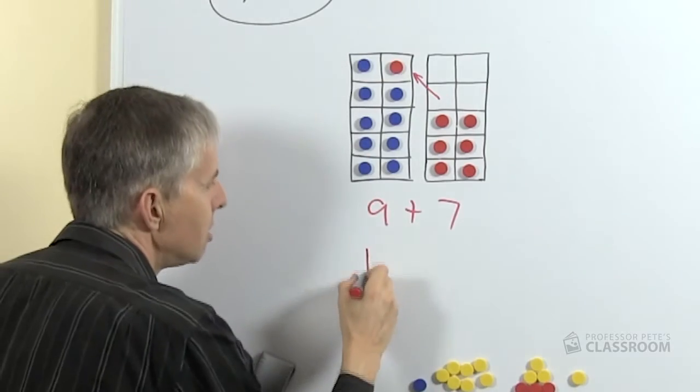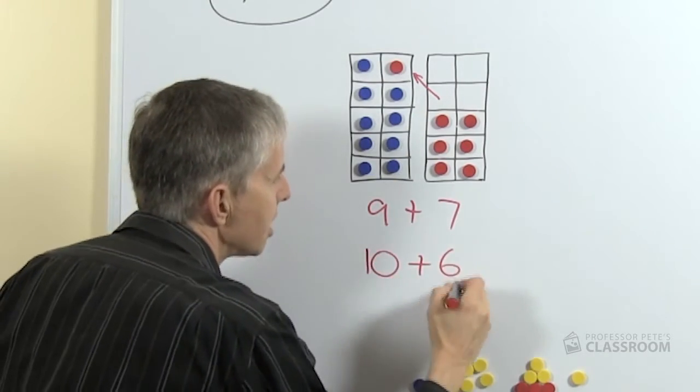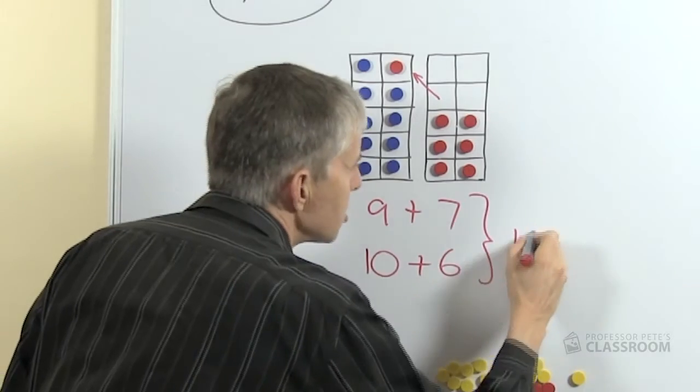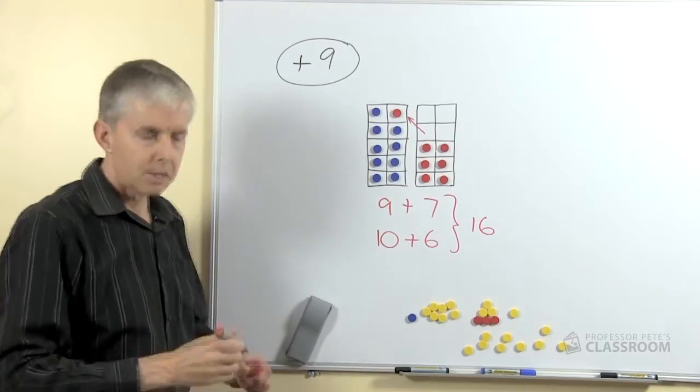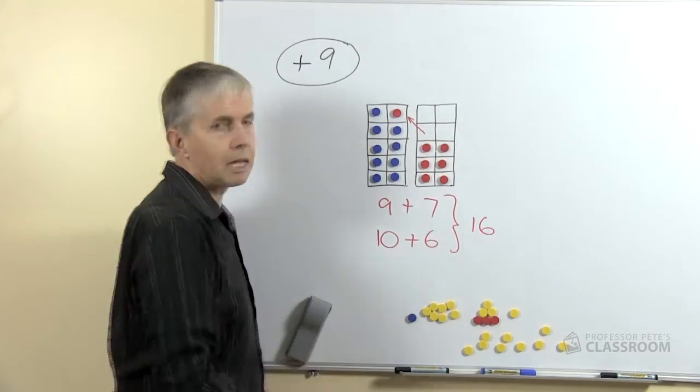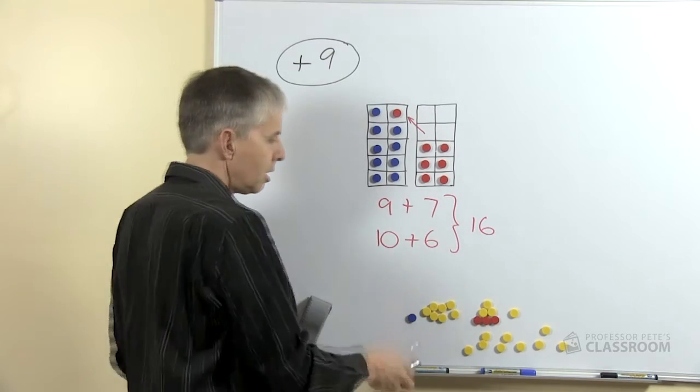Now we have 10 on this side. How many do we have here? Obviously we have 6. So the answer to both those questions will be the same. In this case we haven't removed any counters, they're both the same number, we've just rearranged them.